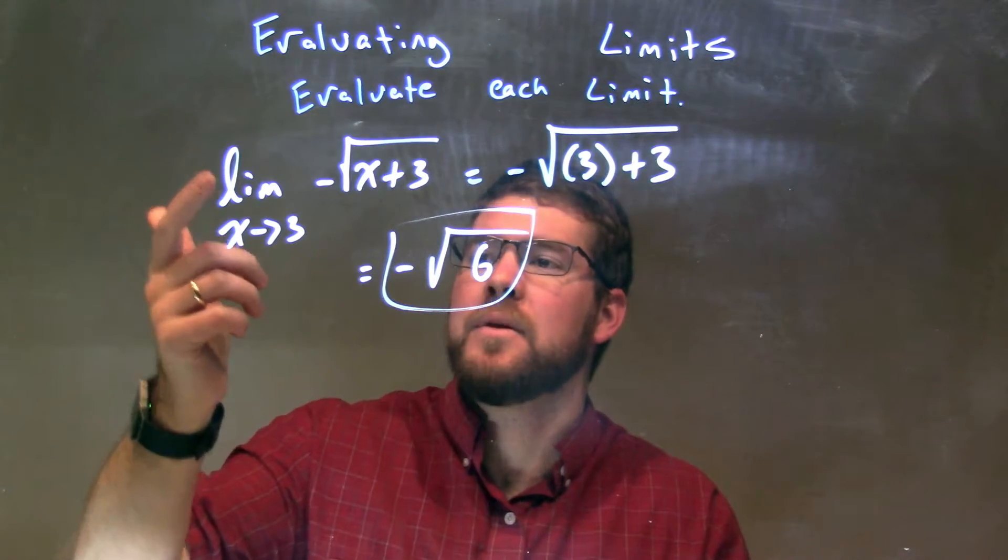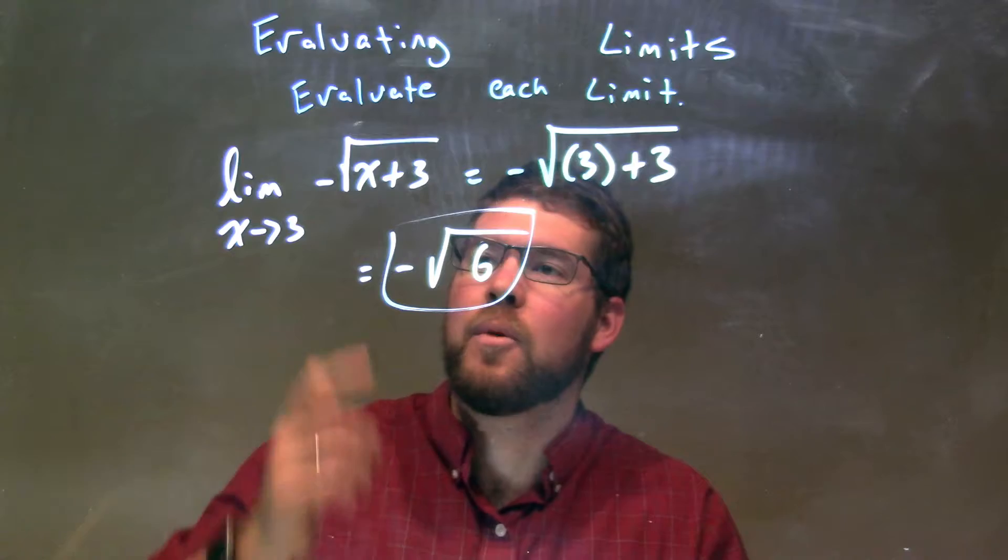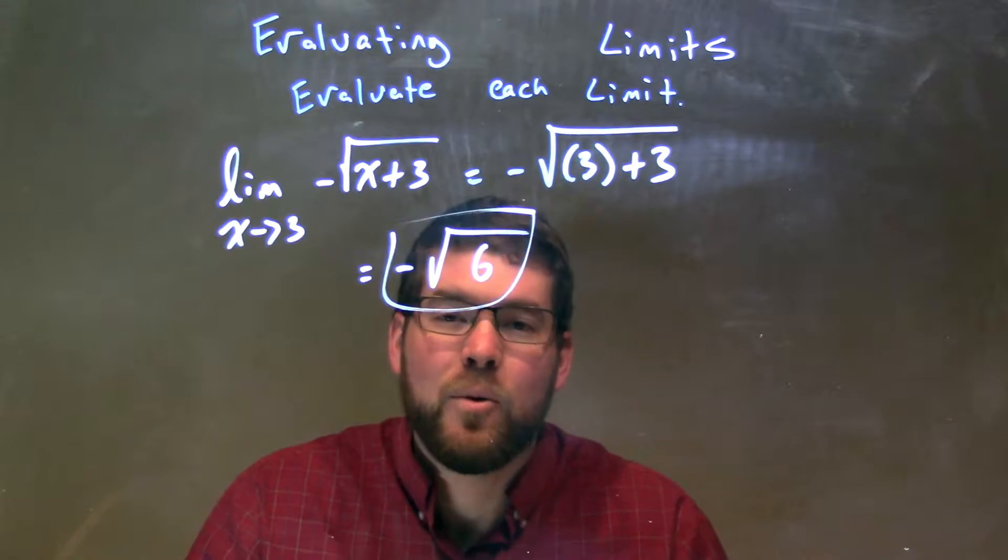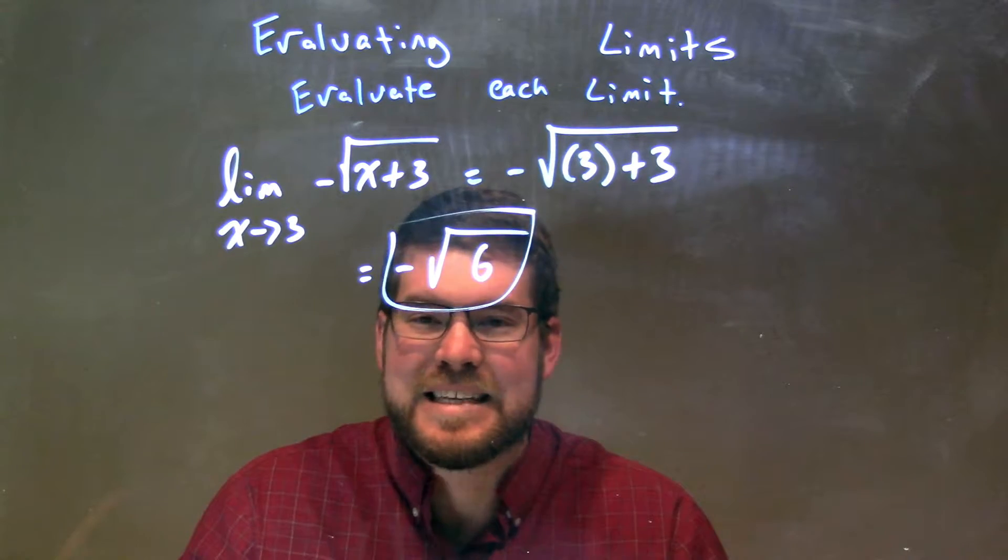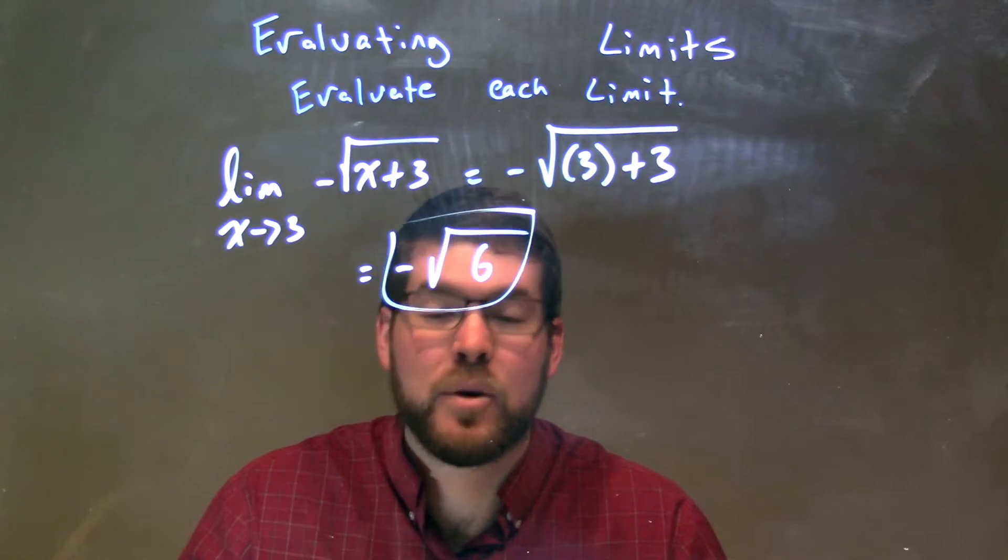So let's recap. We're given a limit as x approaches 3 of negative square root of x plus 3. Well, we have a root function here, and we can only take a limit of where that function exists. It's continuous everywhere where it exists.